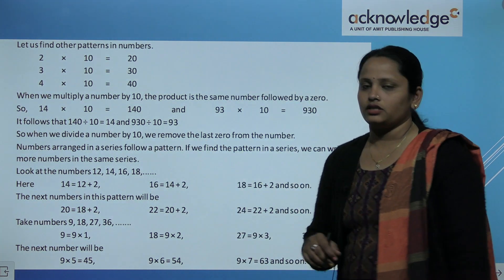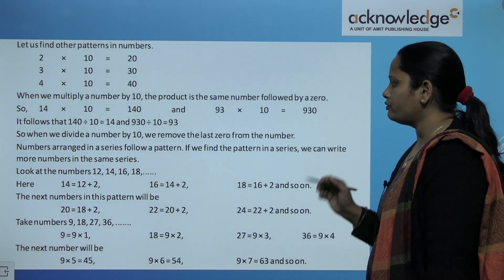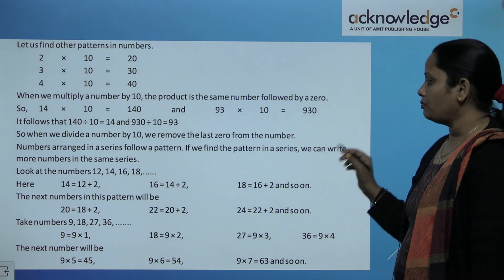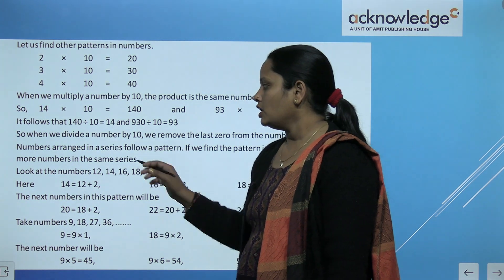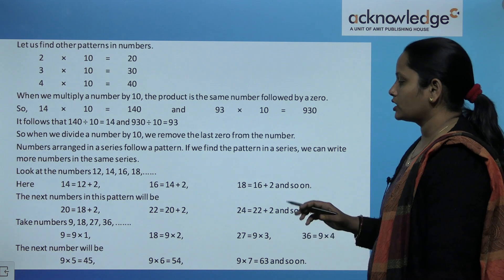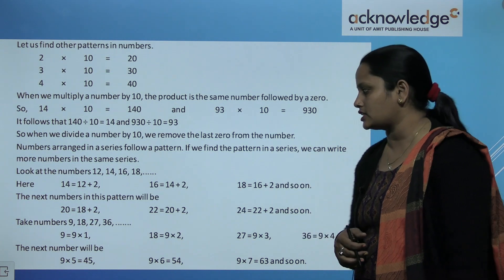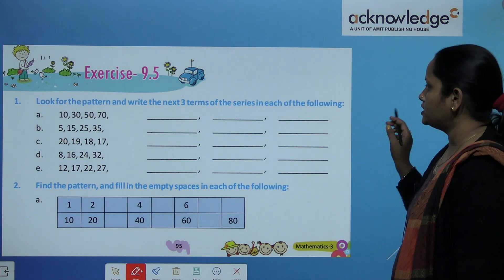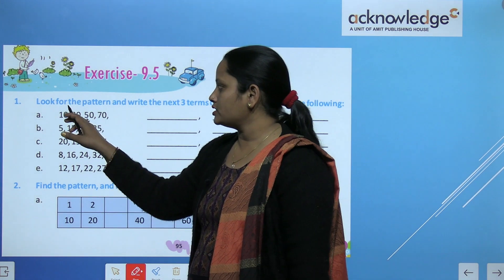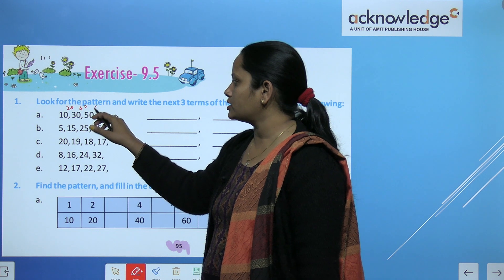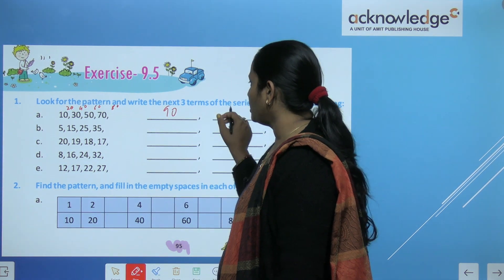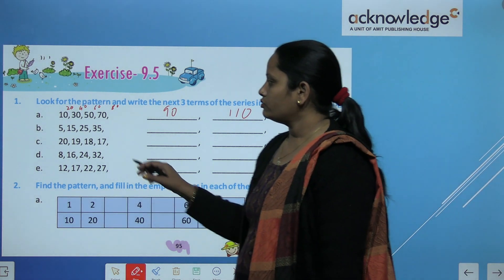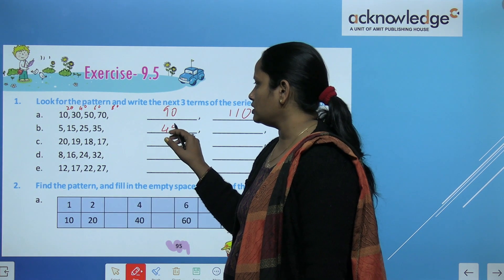Numbers arranged in the series follow a pattern. If we find the pattern in a series, we can write more numbers in the same series. Look at the numbers 12, 14, 16 and 18. Aap dekh sakte in mein 2-2 numbers ko humne add kiya hai, then we got the next number. So let's do this exercise children, exercise number 9.25. Look at the pattern. Write the next 3 terms of the series of each of the following. So it's 10, now 20 is 30, 40 is here, 50, 60 is here, 70, 80 will be, then 90, 100, 110, 120, 130. So this is the pattern here. Next is 5, 15, 25, 35, 45.